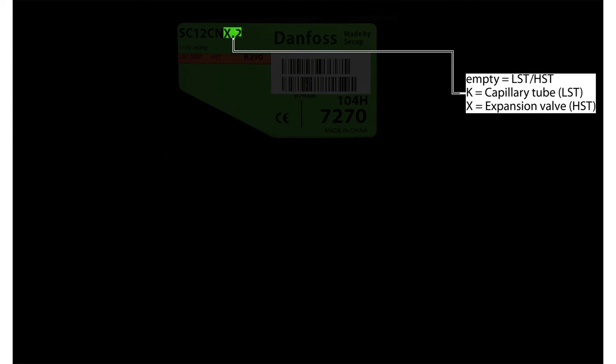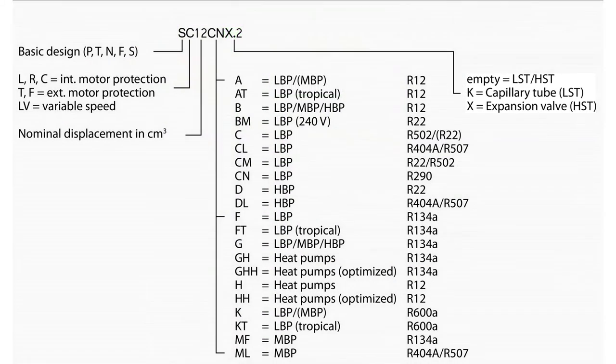The seventh digit indicates the equipment version or generation. Depending on the model number of the compressor, the nomenclature will vary between four and seven digits in length.